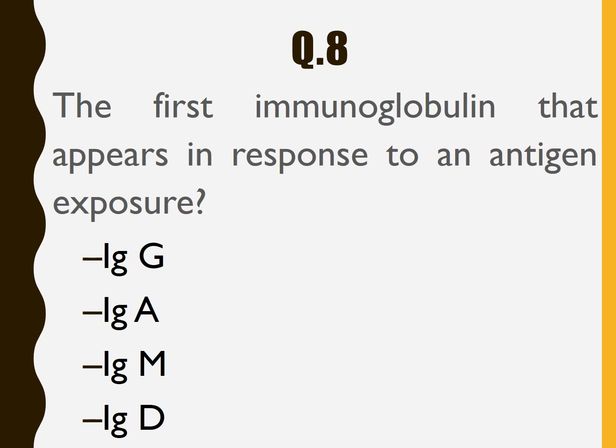Question number 8: The first immunoglobulin to appear in response to antigen exposure is — IgG, IgA, IgM, or IgD? The answer is IgM.